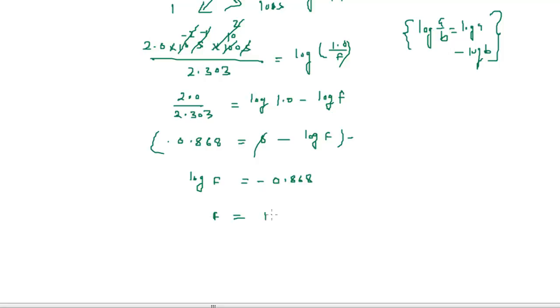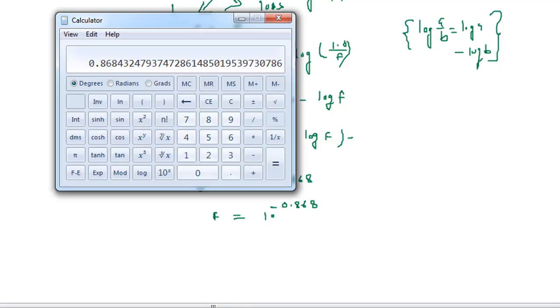As a result, here we get F equals 10^-0.868. Now we can use the calculator: minus 0.868, and then 10 to the power, we get 0.135.